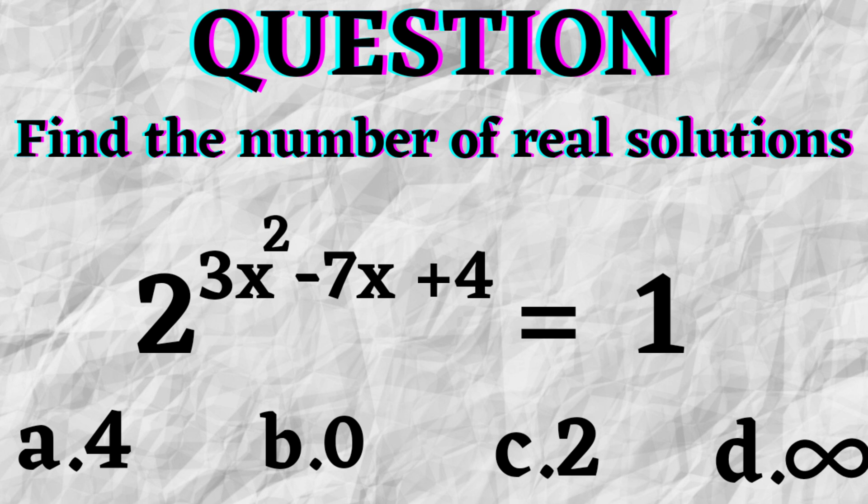Now as you can see in this video, we'll solve this question in which we have to find out the number of real solutions of 2 to the power 3x square minus 7x plus 4 equal to 1. We are given four options: 0, 4, 2, and infinitely many.